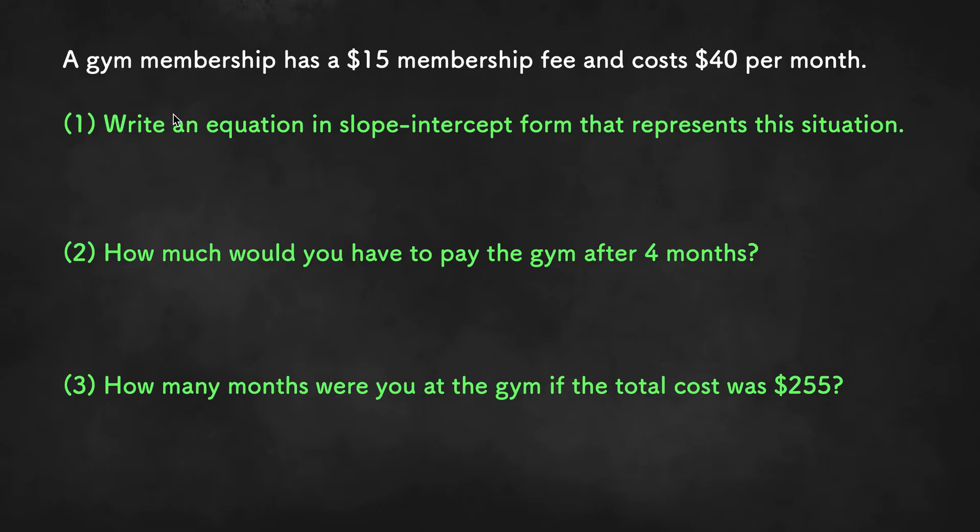So here we have a word problem with three parts. It says a gym membership has a $15 membership fee and costs $40 per month. We are first asked to write an equation in slope-intercept form that represents this situation.